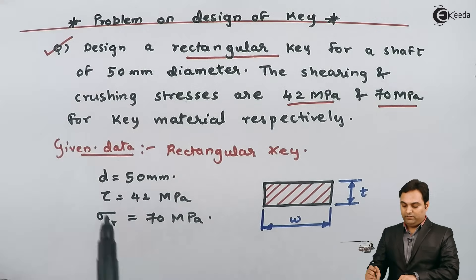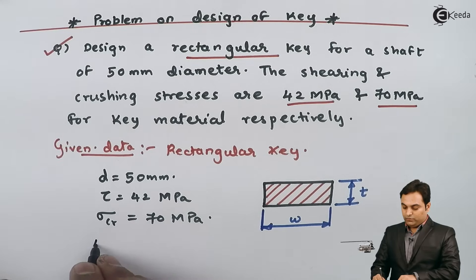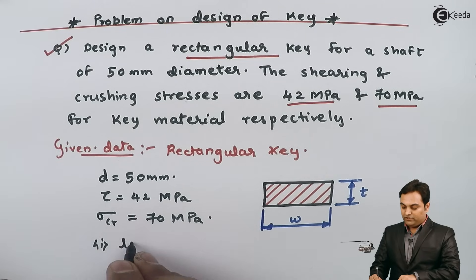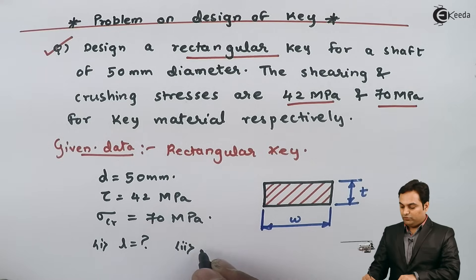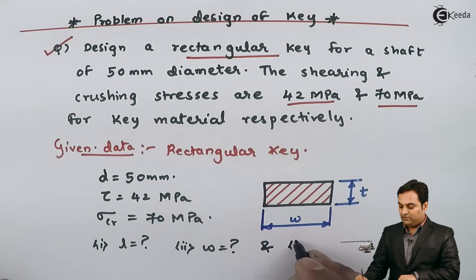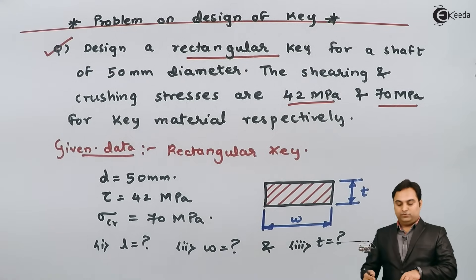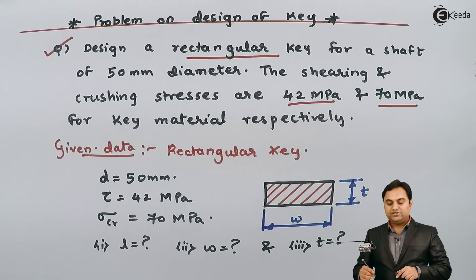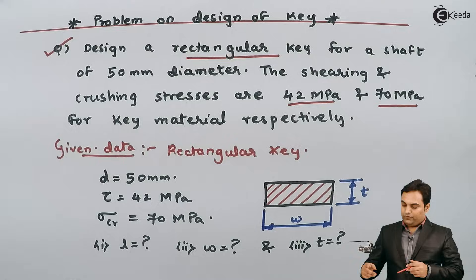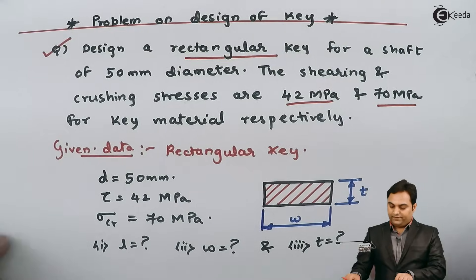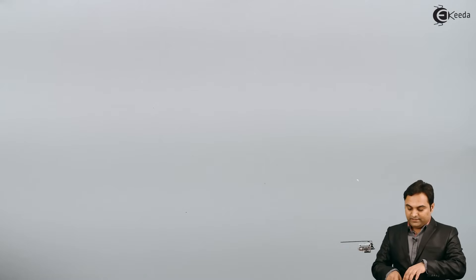By designing the key we mean we need to find three dimensions: the length of the key, the width of the key, and the thickness of the key. So these three dimensions we need to find out. Let's move to the solution.